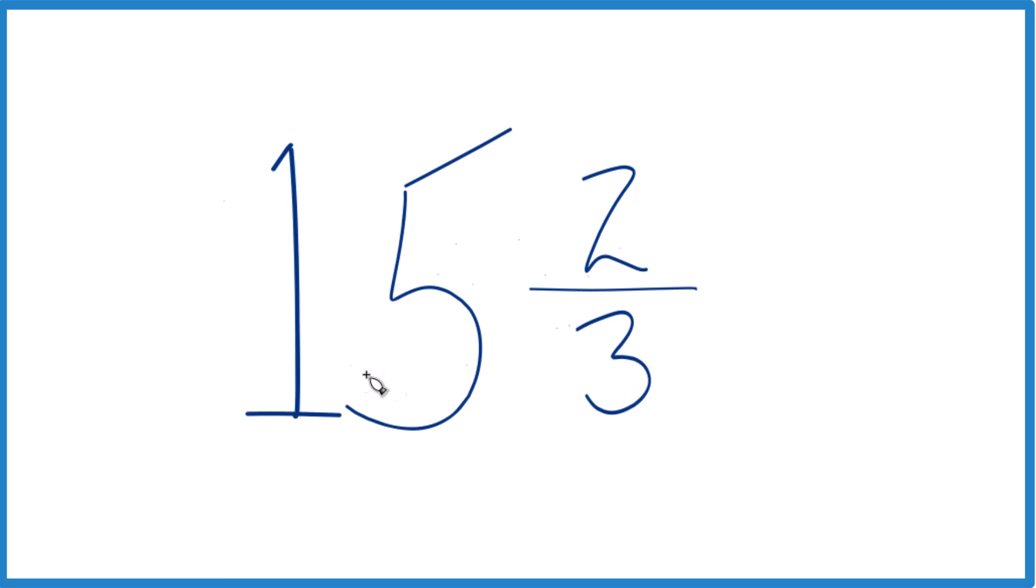You take the whole number, that's the 15, multiplied by 3. 15 times 3, that's 45.